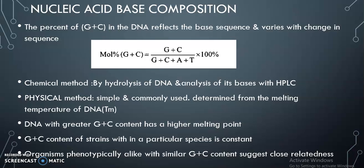Nucleic acid base composition: the percent of GC content in DNA reflects the base sequence and varies with change in sequence. Two methods are available — chemical and physical. In the chemical method, DNA is hydrolyzed and its bases analyzed with HPLC (high performance liquid chromatography). In the physical method, the melting temperature of DNA is determined. DNA with greater GC content has a greater melting point. GC content of strains within a particular species is always constant. Organisms phenotypically aligned with similar GC content suggest close relatedness.